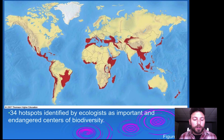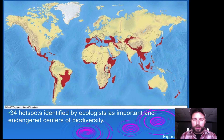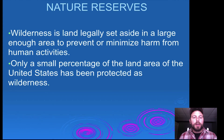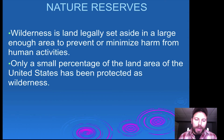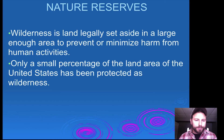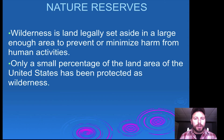This map shows the number of different global hotspots identified by ecologists around the world and their rough locations. Regarding wilderness: wilderness areas are legally set aside in large enough areas to prevent or minimize harm from human activities. However, only a small percentage of land in the United States has been protected as wilderness, and this is another area we'd like to expand.